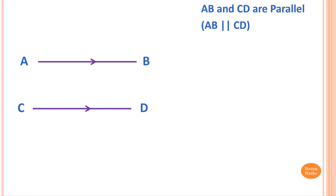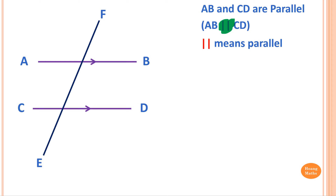We can write this as AB parallel to CD. These symbols here mean parallel. Now we have EF, the line EF passing through AB and CD, so EF is called a transversal. With this transversal line passing through the pair of parallel lines, it creates different kinds of angles.